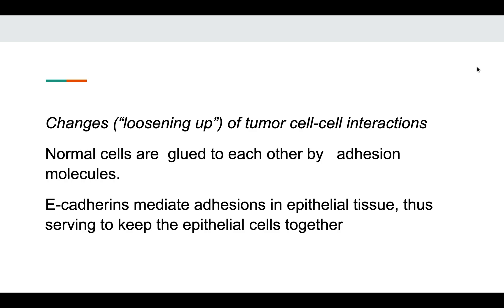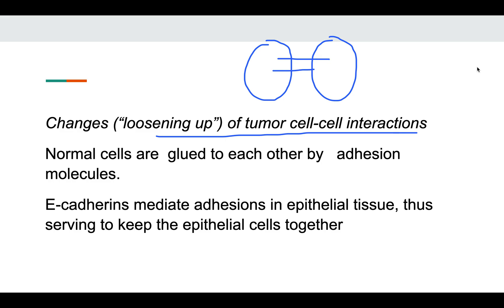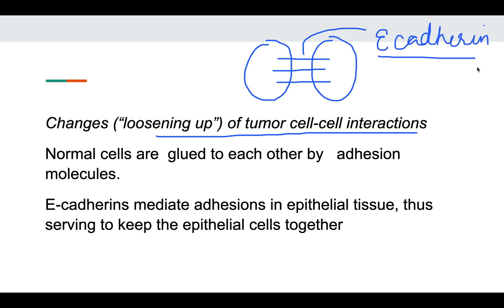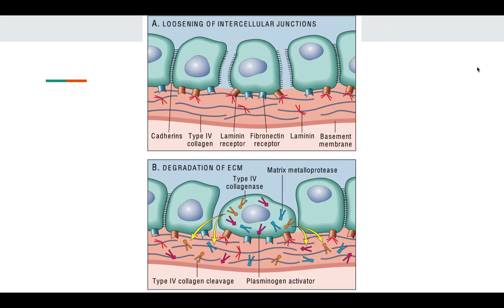Going into a little more detail, the first step is loosening up of tumor-to-tumor cell interactions. Two cells are bound to each other by adhesion molecules or intercellular junctions. Normal cells are glued to each other by adhesion molecules — an example is E-cadherin. E-cadherin is seen in carcinoma of the breast and colon, and loss of E-cadherin has a bad prognosis. So the first step is loosening up of intercellular junctions.